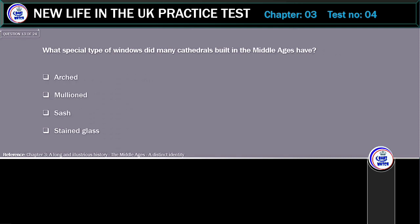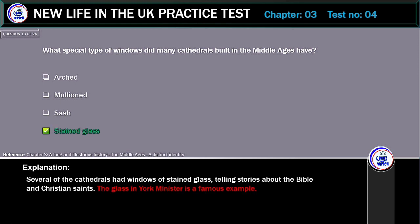What special type of windows did many cathedrals built in the Middle Ages have? Options: arched, mullioned, sash, or stained glass. The correct answer is stained glass. Several of the cathedrals had windows of stained glass telling stories about the Bible and Christian saints. The glass in York Minster is a famous example.